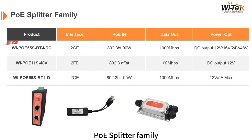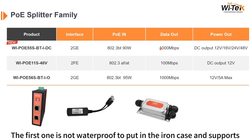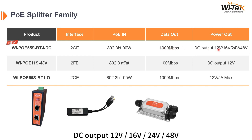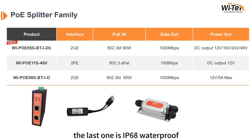For the PoE splitter family, we have rates from 100 megabits per second to 1000 megabits per second. The first one is not waterproof, fits in an iron case, and supports DC output at 12 volts, 16 volts, 24 volts, and 48 volts. The second has a 12 volt output. The last one is IP68 waterproof.